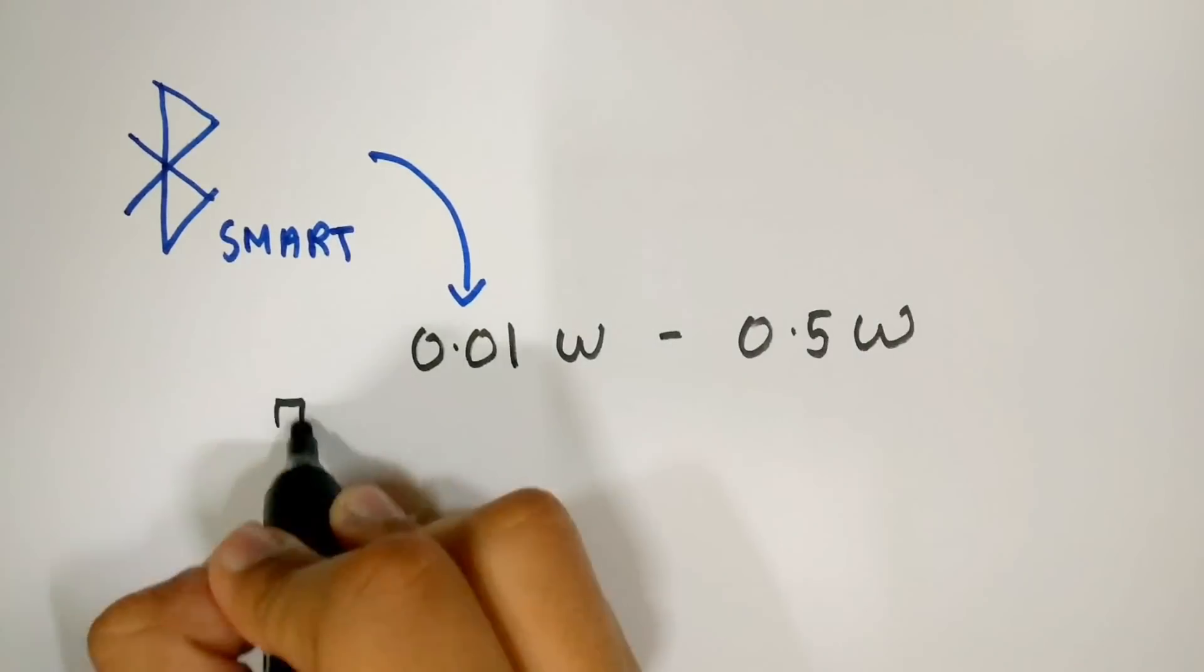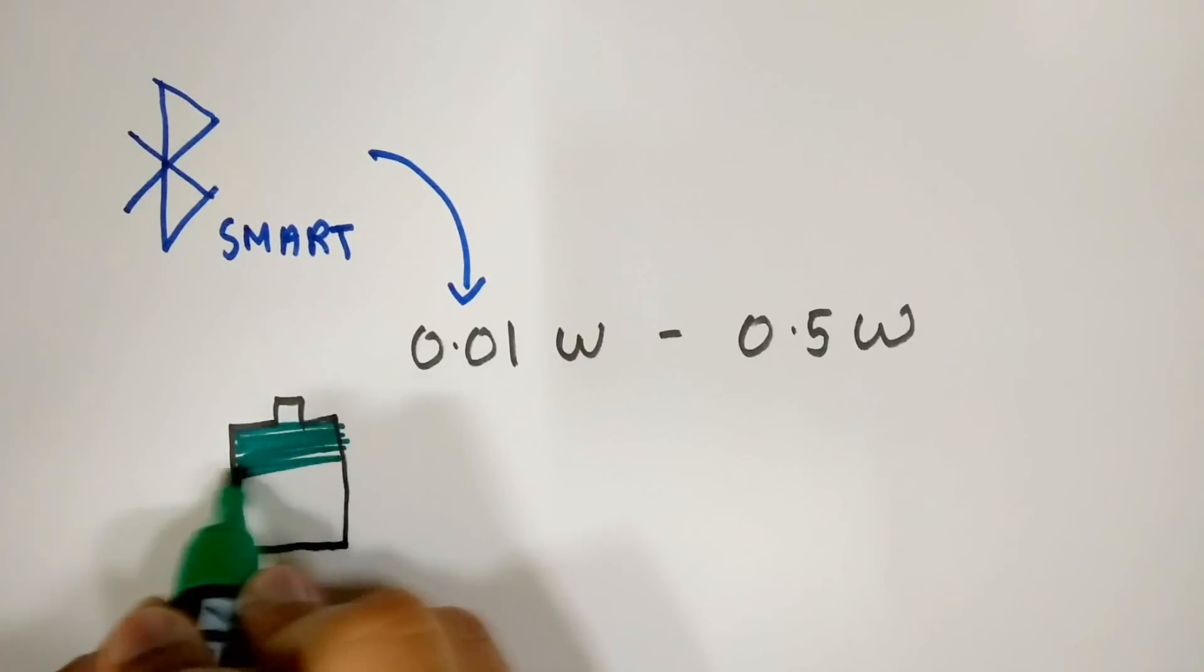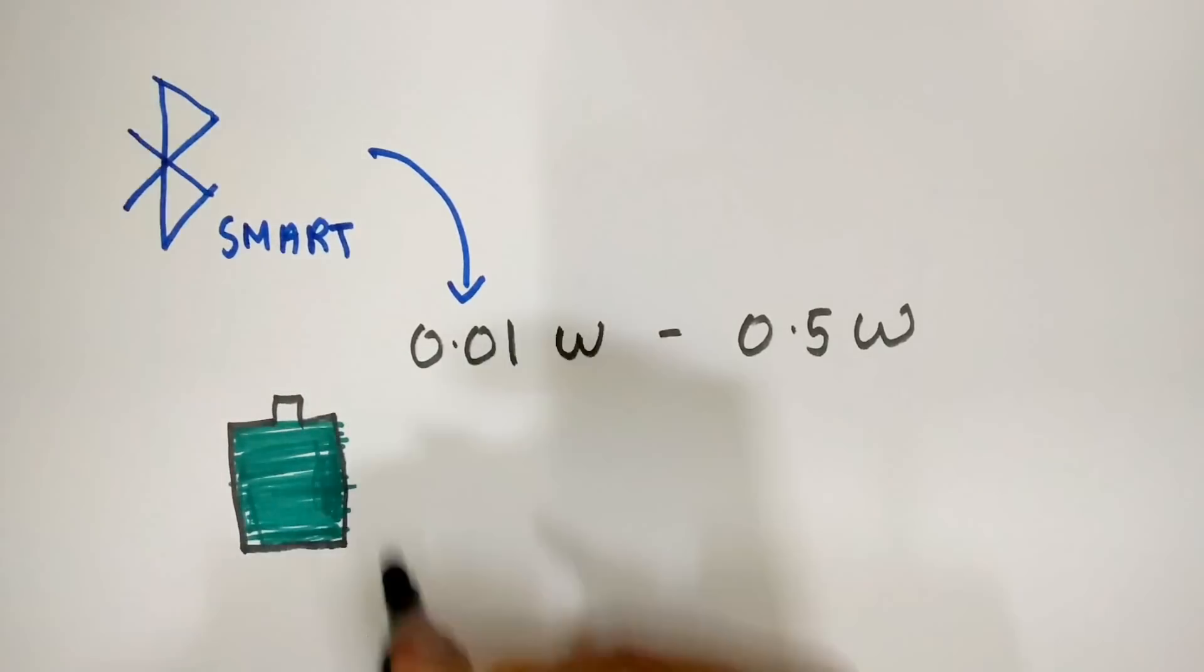The new Bluetooth smart technology uses as low as 0.01 watts to 0.5 watts. Hence, using Bluetooth does not drain your phone's battery.